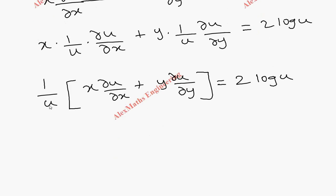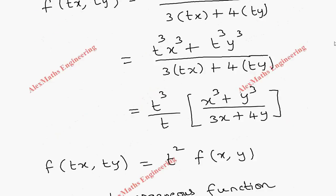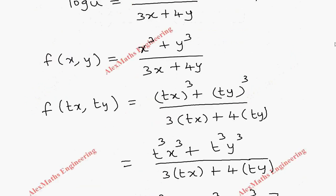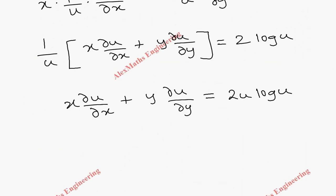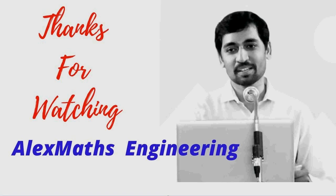Multiplying u to the other side, we finally get x·∂u/∂x + y·∂u/∂y = 2u·log u. So in the question we were given to prove x·∂u/∂x + y·∂u/∂y = 2u·log u, which we have obtained using Euler's theorem. Thank you.